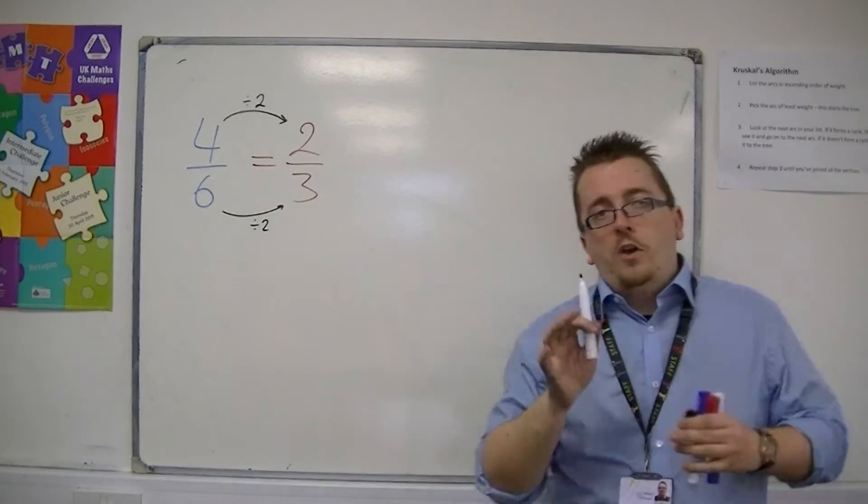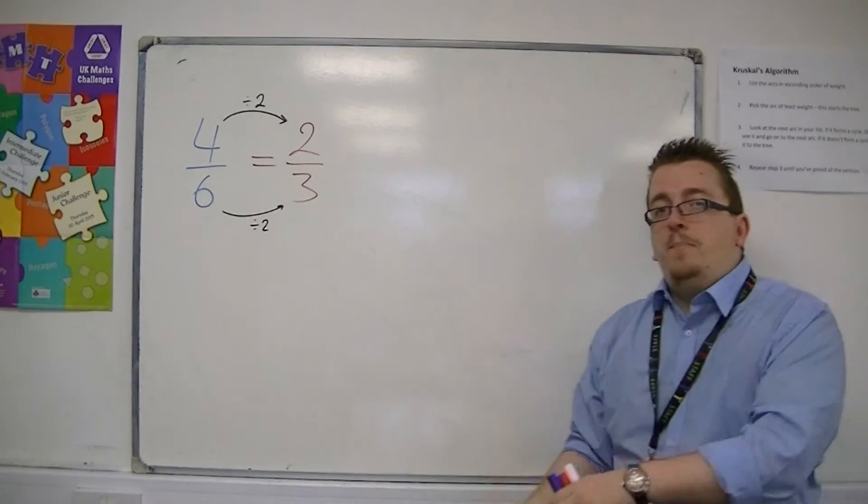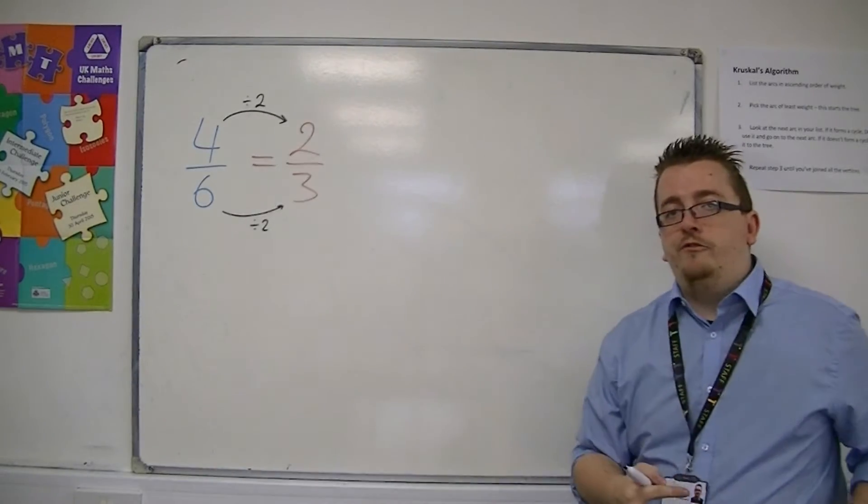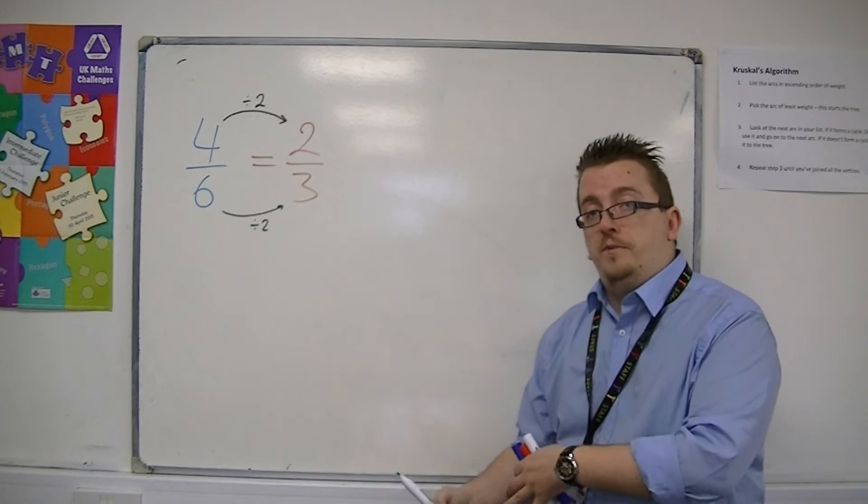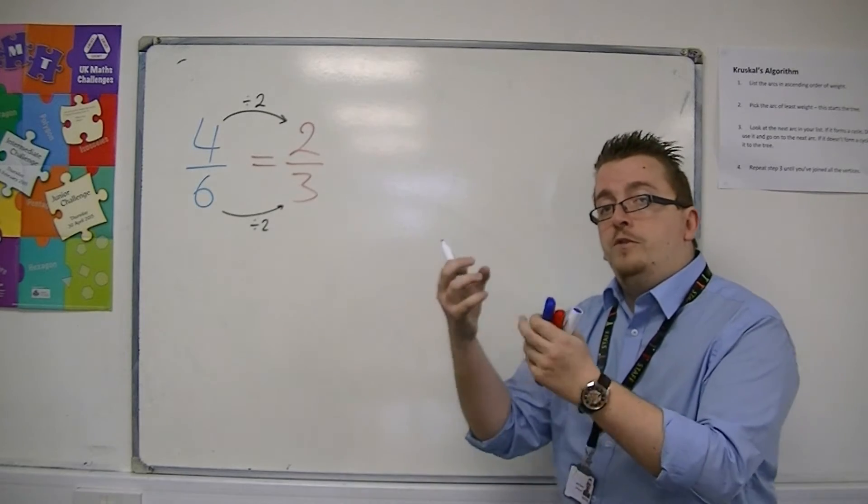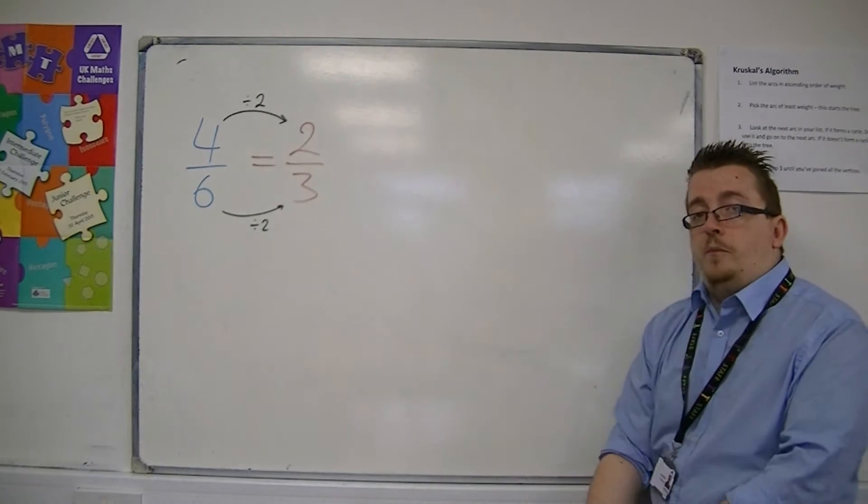The whole way of being able to manipulate a fraction to get an equivalent fraction is that you perform exactly the same operation to the top as you do the bottom. So you multiply and divide the top as well as the bottom.